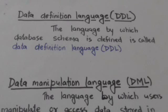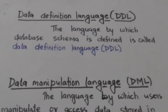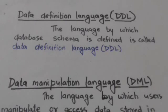The language by which a database schema is defined is called Data Definition Language, that is DDL. Consistency constraints which should be satisfied by data values stored in the database can be specified by DDL.